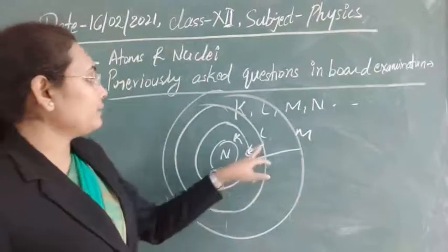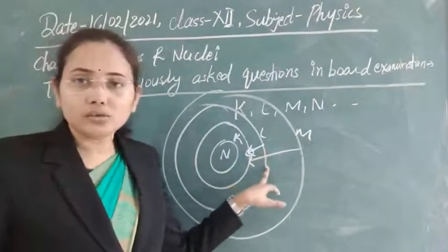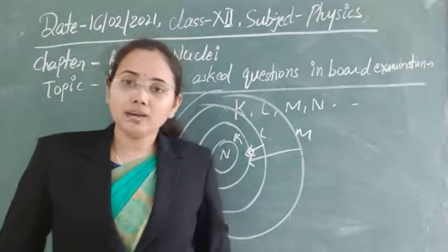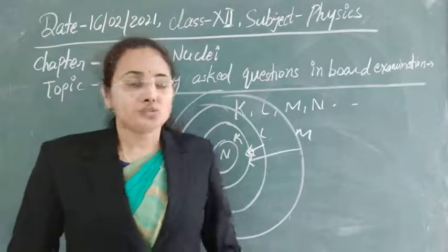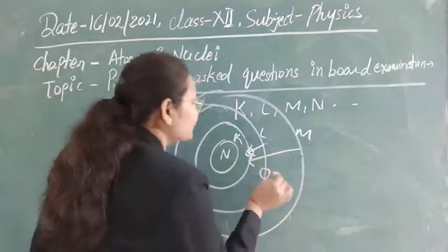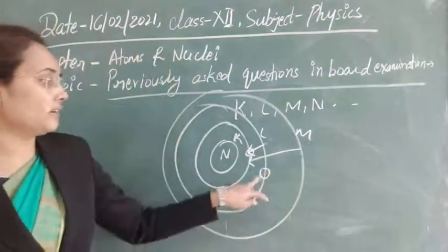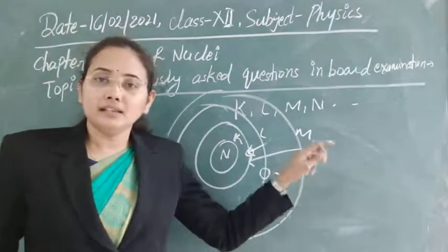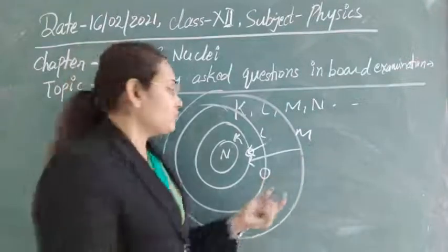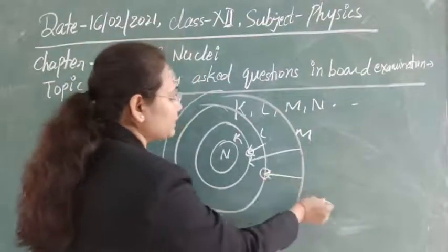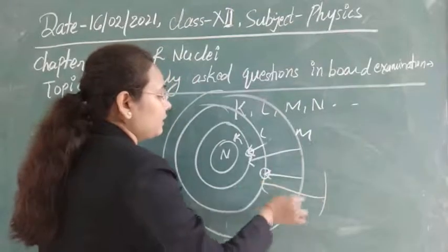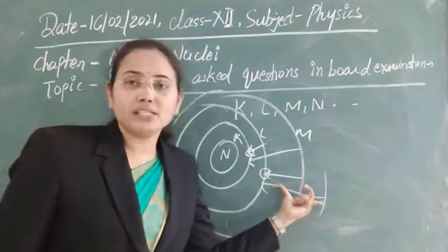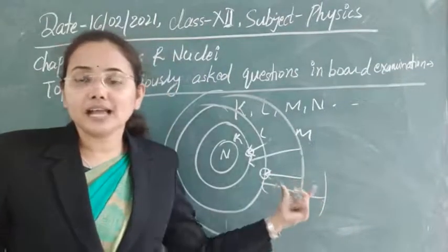Similarly, if a vacancy is created in the L shell by an accelerating electron, higher-orbit electrons from M shell and above will transition down to fill it, producing another series of frequencies. This series is known as the L series.